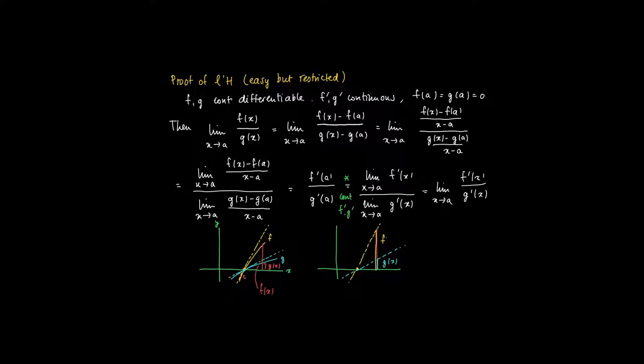Along the tangent lines is almost the same as the function value. So f of x divided by g of x is very close to the change along the dashed yellow line, which is x minus a times f' of a divided by x minus a g' of a.